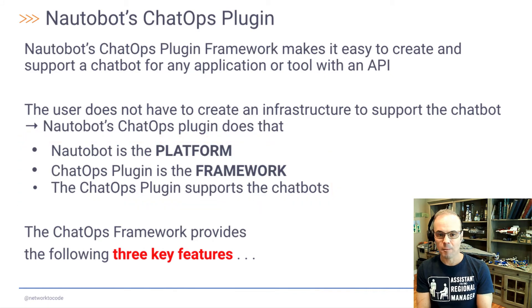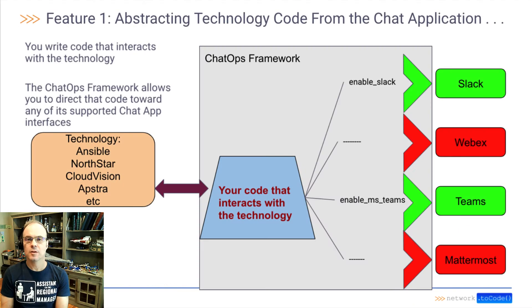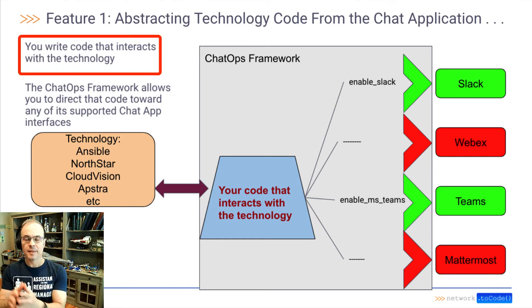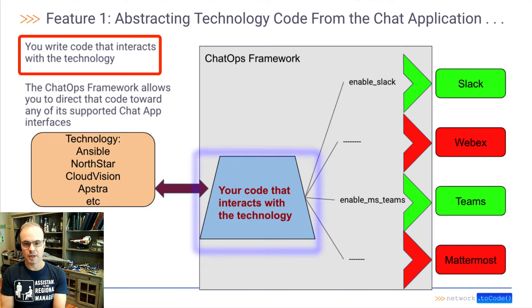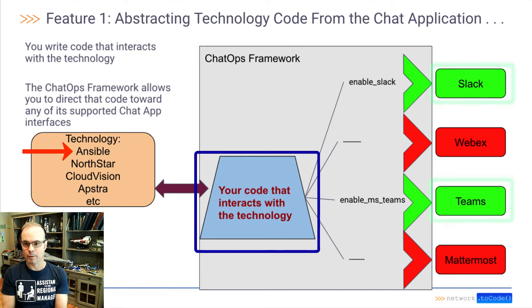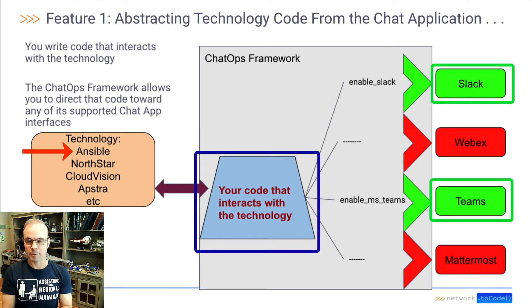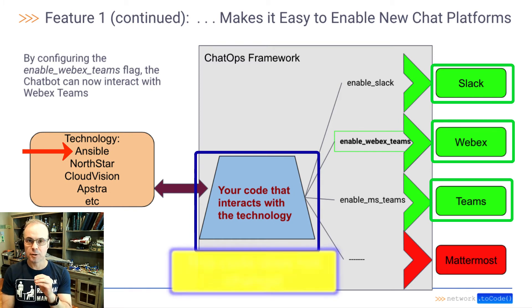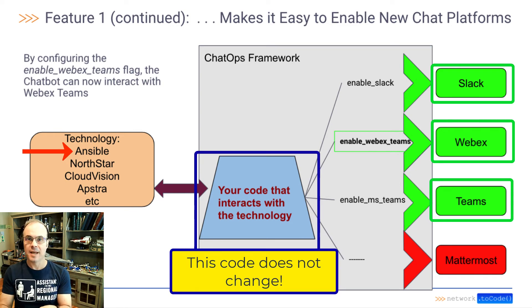The ChatOps platform framework provides three key features. The first is the capability to abstract the code you use to interact with your technology from the chat application that supports the chatbot. For example, if you've written code that interacts with Ansible and the Ansible chatbot is enabled in Slack and Teams, and you now need it enabled in WebEx as well, the framework makes it easy to set the enable WebEx Teams flag — without modifying your underlying code that's interacting with Ansible.